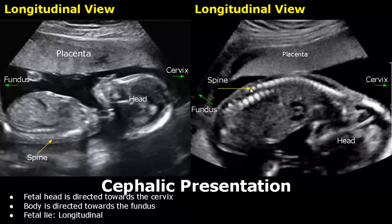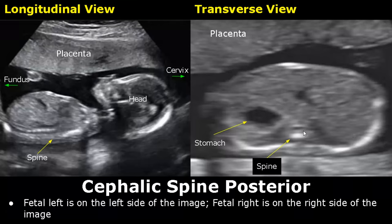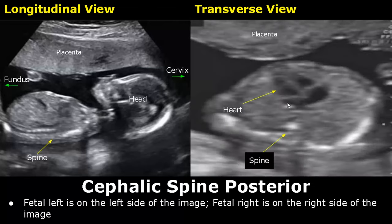This is a cephalic presentation with an anterior spine, where the spine is facing anteriorly. Regarding cephalic presentation, there are two orientations. The first one is cephalic spine posterior, where the spine is seen on the lower side of the image in both longitudinal and transverse views. In the transverse view, the fetal left is on the left side of the image and fetal right is on the right side. We can see the stomach on the left side of the image — so this is the fetal left. Similarly, the heart is also seen on the left side, with the apex pointing towards the left side of the image.